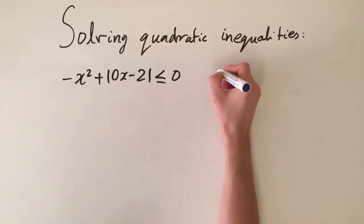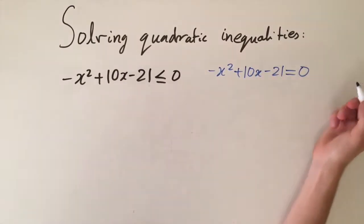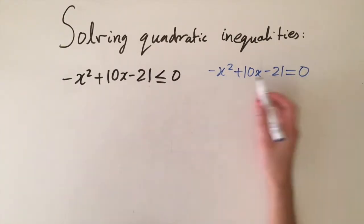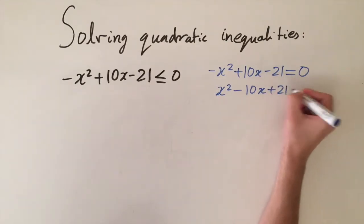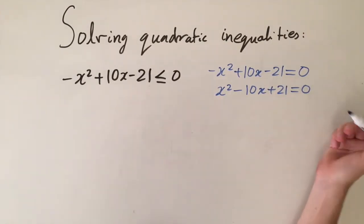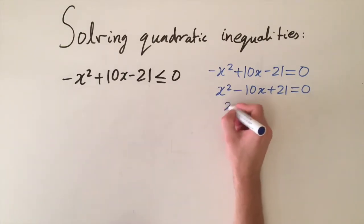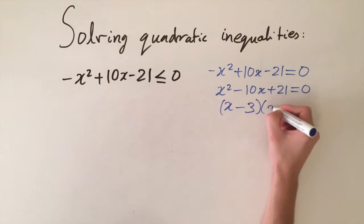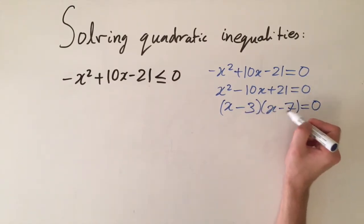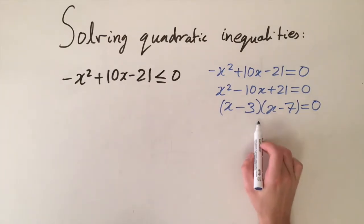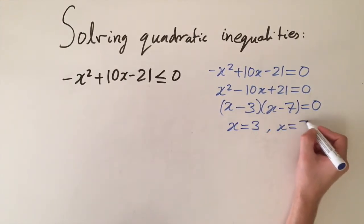We take the inequality sign and replace it by an equality, writing the critical equation: minus x squared plus ten x minus twenty-one equals zero. Because it's set equal to zero we can multiply through by minus one to make it easier, giving us x squared minus ten x plus twenty-one equals zero. This factorizes as x minus three times x minus seven equals zero. So minus three times minus seven gives us twenty-one, and minus three x minus seven x gives minus ten x. Setting each bracket equal to zero gives the critical values x equals three and x equals seven.